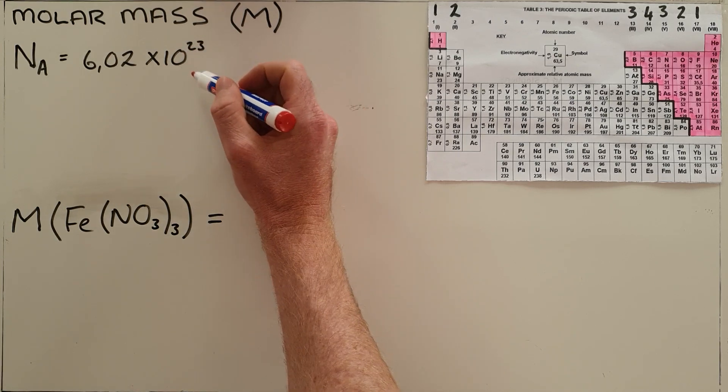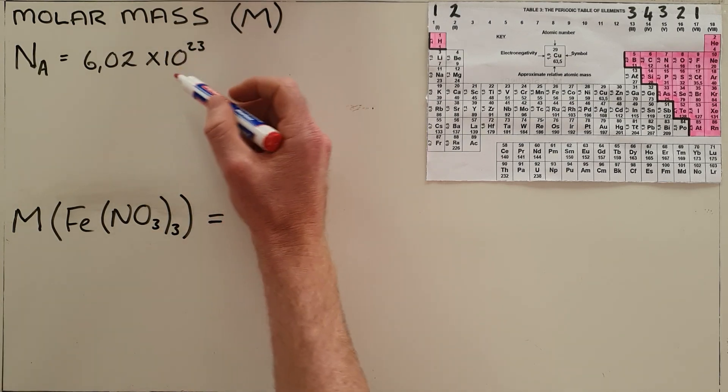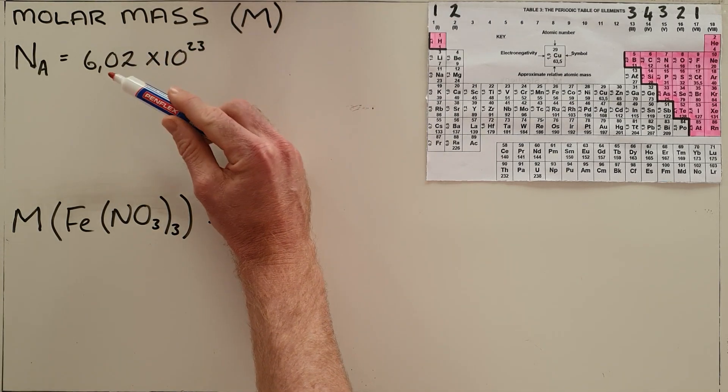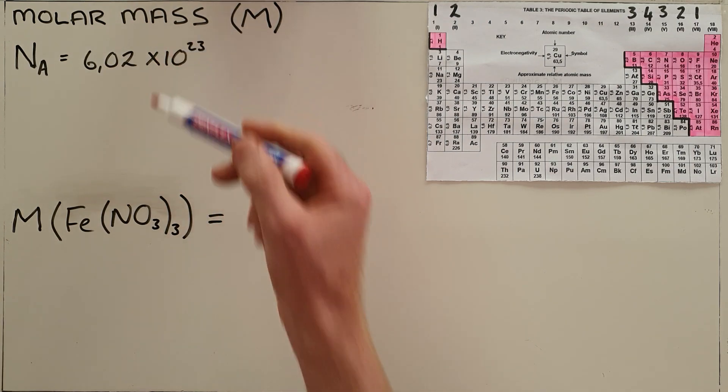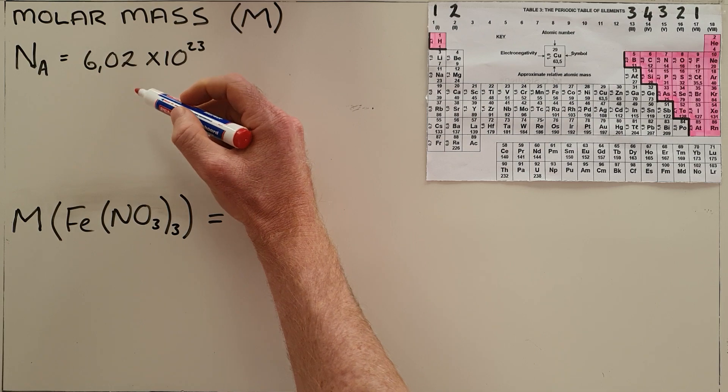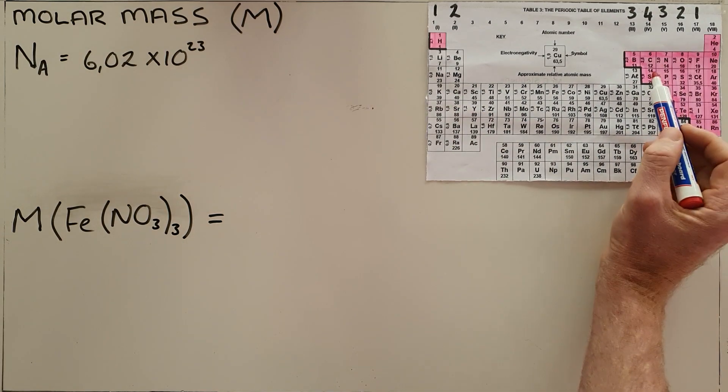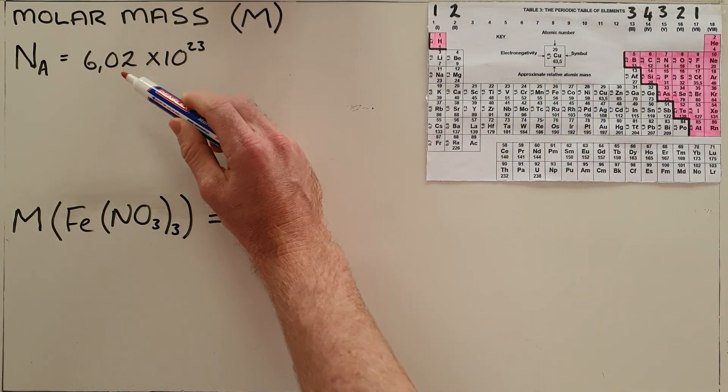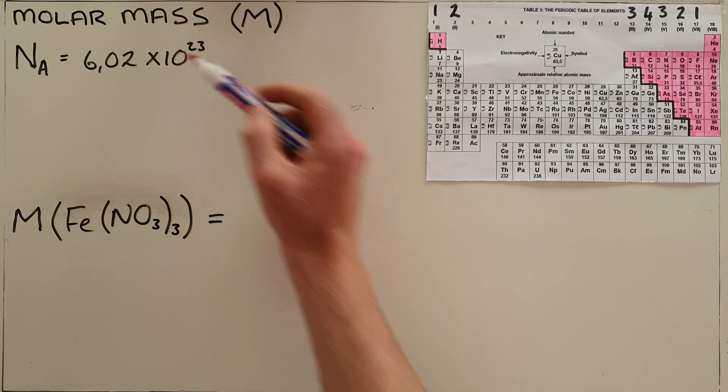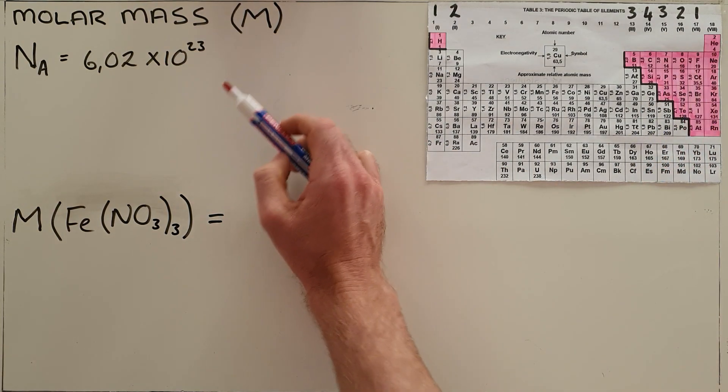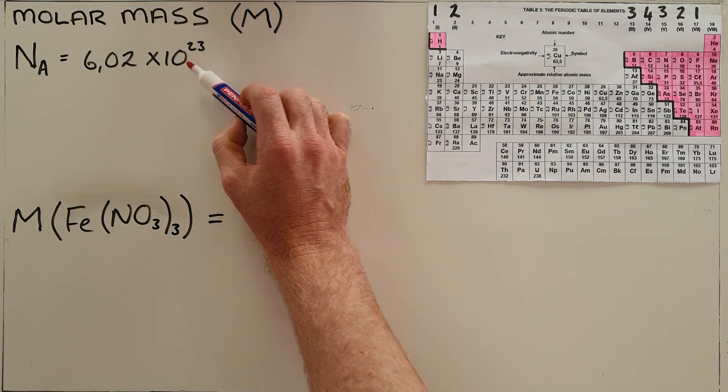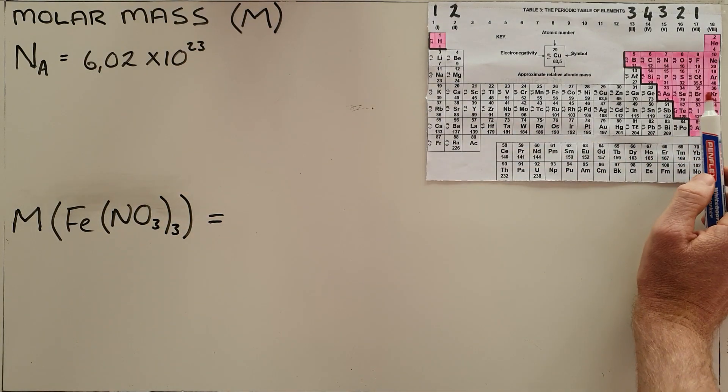We know that a mole of a substance is the standard number known as Avogadro's number, 6.02 times 10 to the power of 23. So when we say we have a mole of carbon atoms, we're saying we have 6.02 times 10 to the power of 23 carbon atoms. When we say we have a mole of fluorine atoms, we are saying we have Avogadro's number of fluorine atoms.